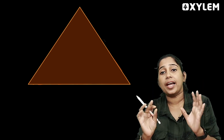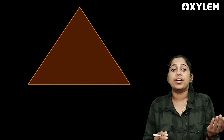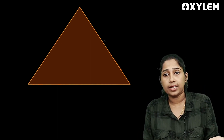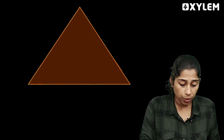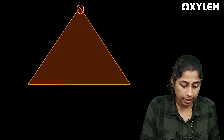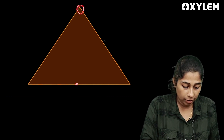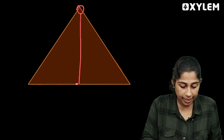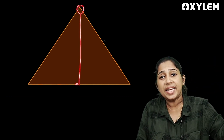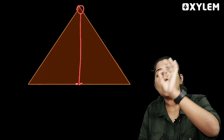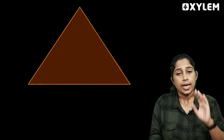We are looking at two lines: Median and Altitude. Where is the line? In a triangle, from a vertex to the opposite side line.